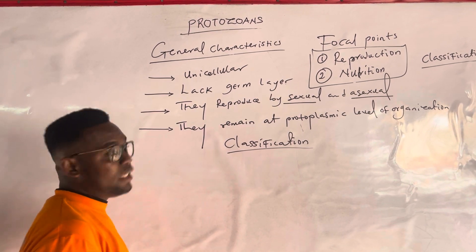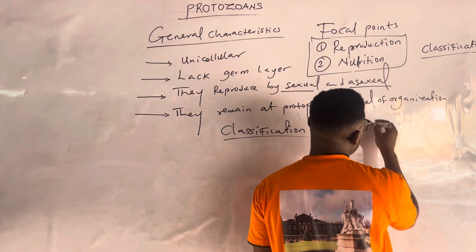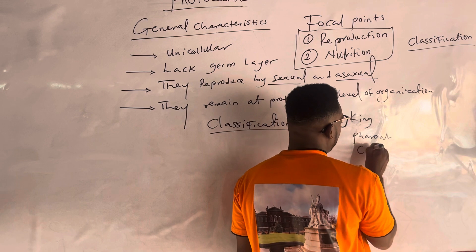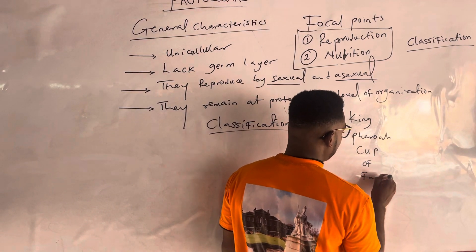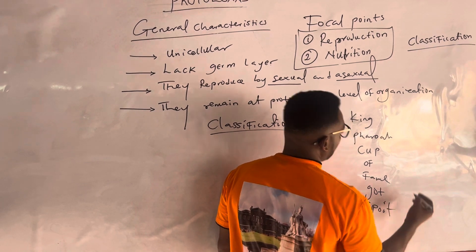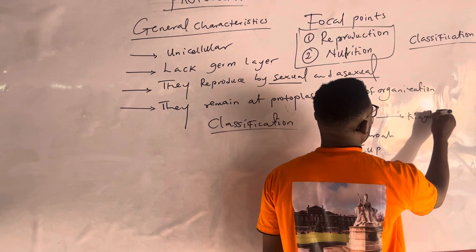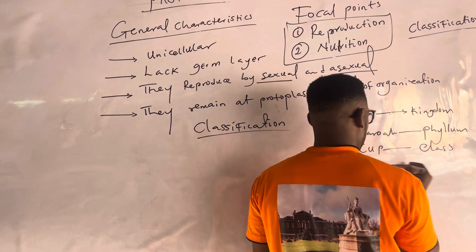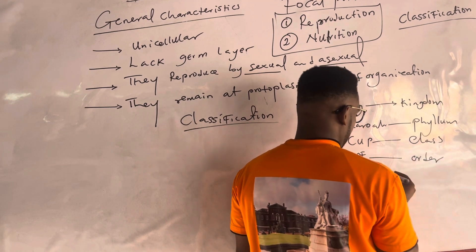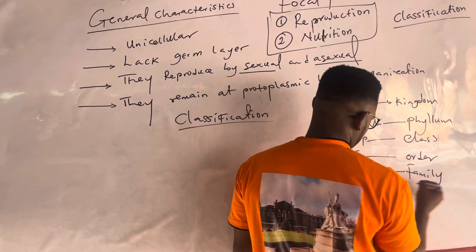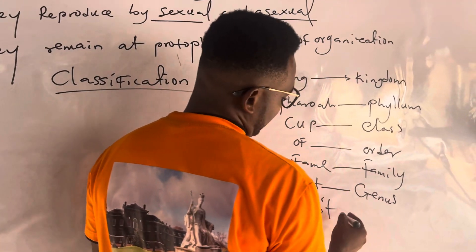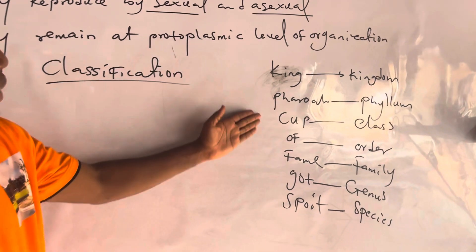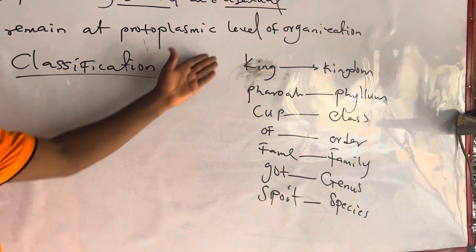After class there is order, using the acronym: King Pharaoh Cup of Fern, God's point. King stands for kingdom; Pharaoh stands for phylum; Cup stands for class; Of stands for order; F stands for family; God stands for genus; and the last one is species. Some people call it KPCOFGS — it's the same thing. You will still get it using that. Using King Pharaoh Cup of Fern, God's point, you get all of them.